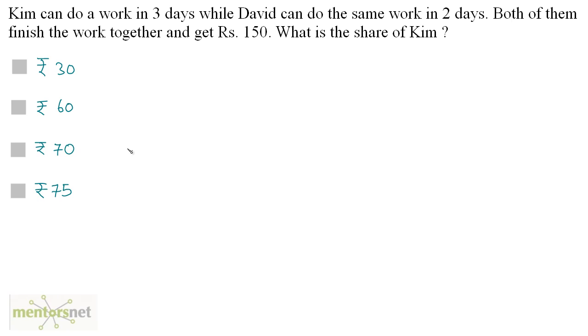Kim can do a work in 3 days while David can do the same work in 2 days. Both of them finish the work together and get Rs 150. What is the share of Kim?